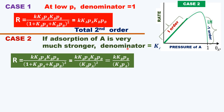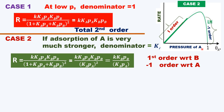Therefore, the reaction is first order with respect to B and minus one order with respect to A. This is because when adsorption of A is very high, as you increase the pressure, A fully occupies the surface. Since B cannot occupy the surface, the rate of reaction actually decreases after a certain pressure. This is why it shows minus one order with respect to A — PA to the power minus 1.